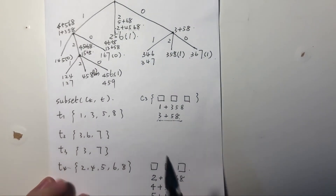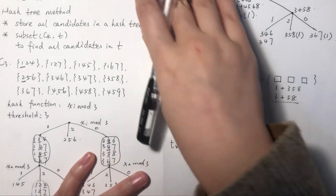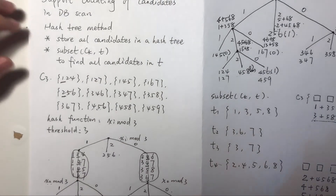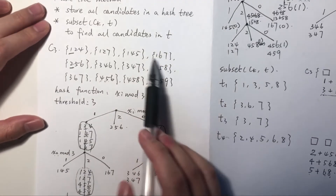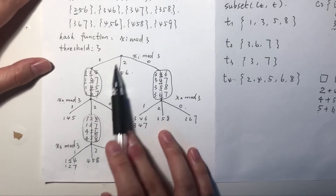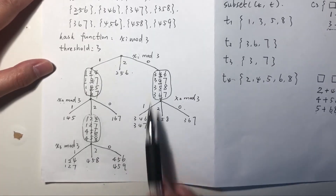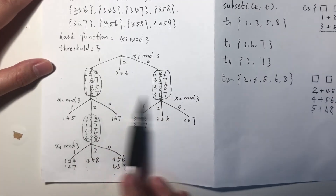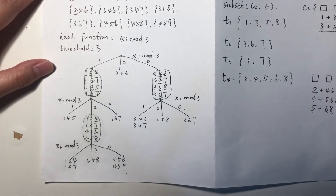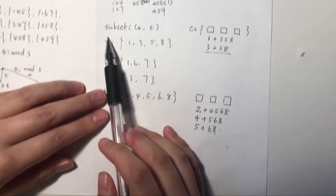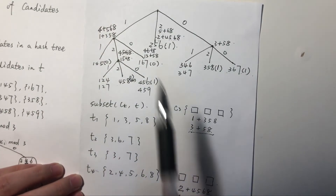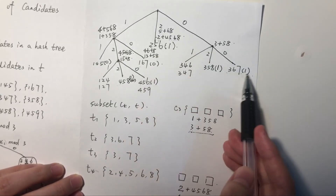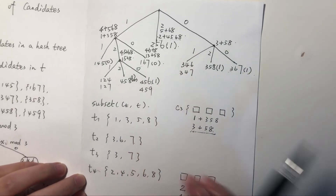Now you see how we do support counting using the hash tree method. First, we store all candidates in the hash tree — remember the first level, the second level, and the third level. After storing them, we use the subset function to get the occurrences of all candidates. That's the hash tree approach to support counting.